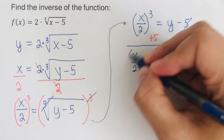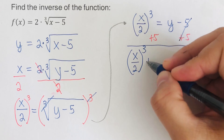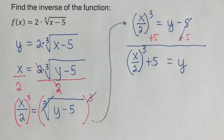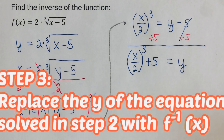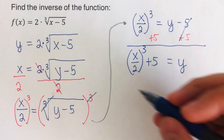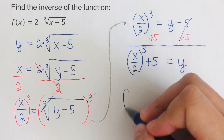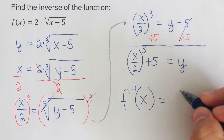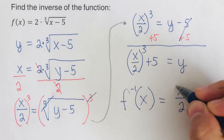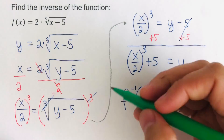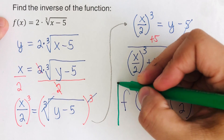The third step is to replace y with f⁻¹(x), which is the notation for inverse. So we rewrite this as: f⁻¹(x) is equal to x over 2, cubed, plus 5. And this is the inverse of this function.